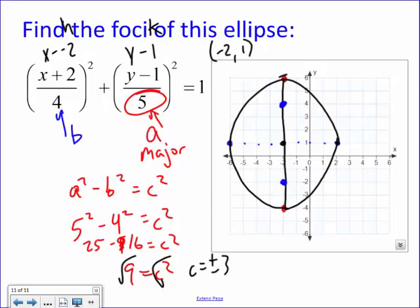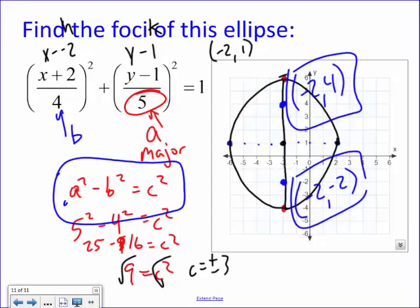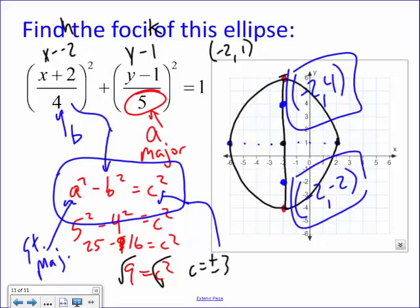To summarize: a² − b² = c². The key definitions are — a is the stretch on the major axis, b is the stretch on the minor axis (the smaller one), and c is the focal length, the distance from the center to a focus. Those are the keys for finding the foci of an ellipse.